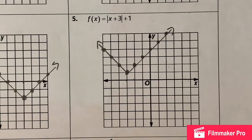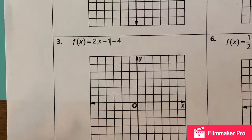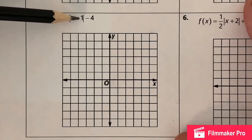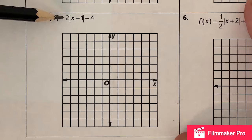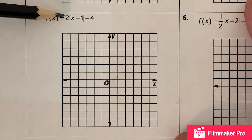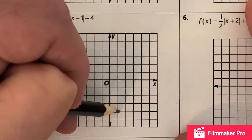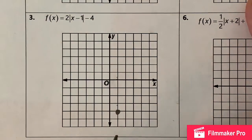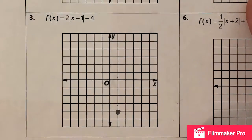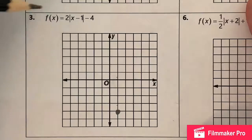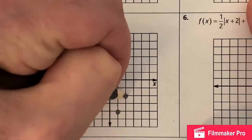This next one has a couple things going on. It has a minus one inside, which is going to push the vertex forward one unit. That minus four is going to drop it down four units. That two out front is not going to affect the vertex — it's either going to make the graph wider or narrower. Since that number is greater than one, it's going to make it narrower. So my vertex is right one, down four. Now the two means I used to go over one up one, but now all these values are being doubled, so I actually go over one up two instead.